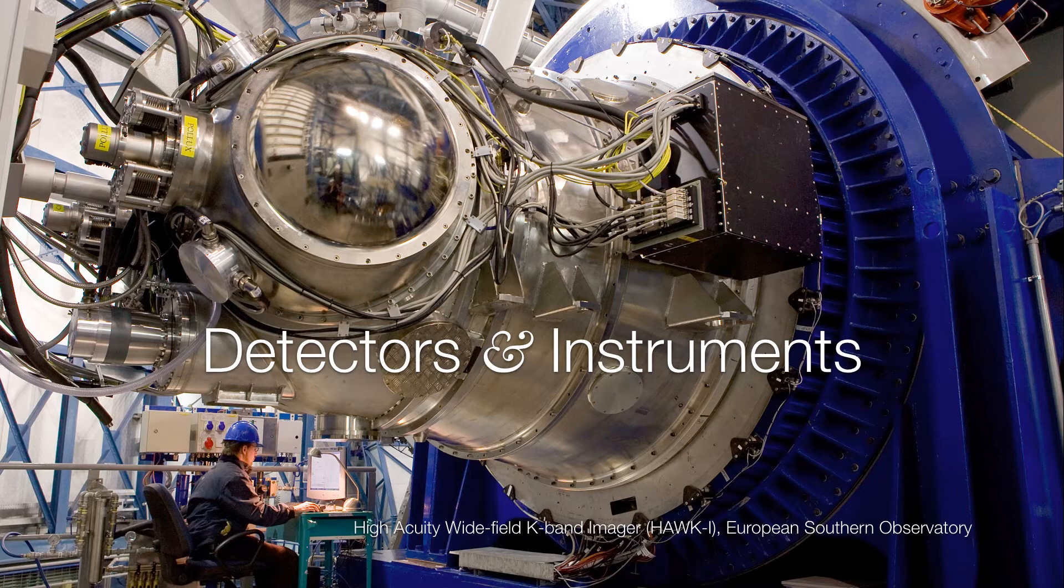So this is the high acuity wide field k-band imager or HAWC-1. It's basically a giant camera and it's attached to the side of a telescope at the European Southern Observatory. As you can see, these instruments can get to be very large and very sophisticated.